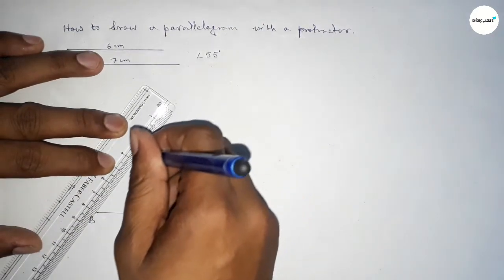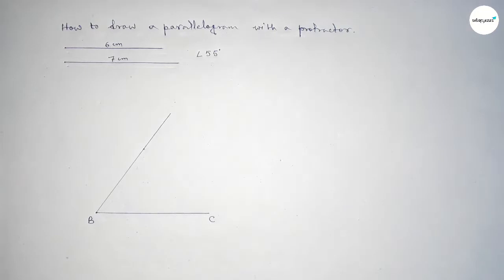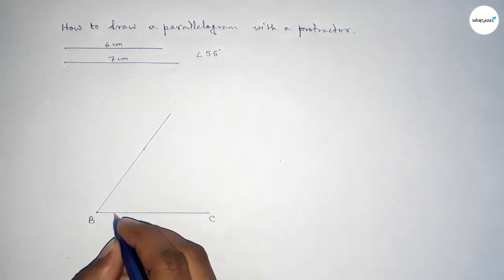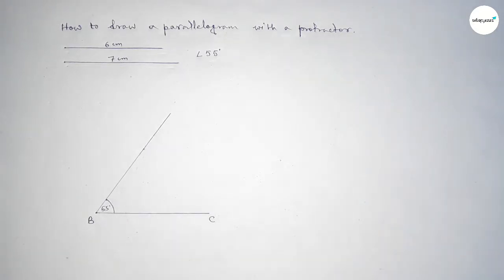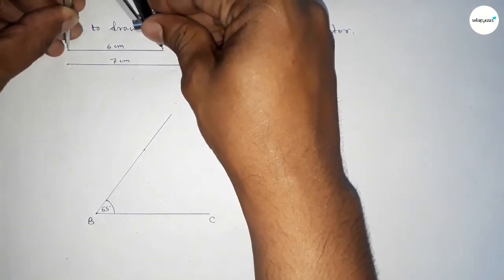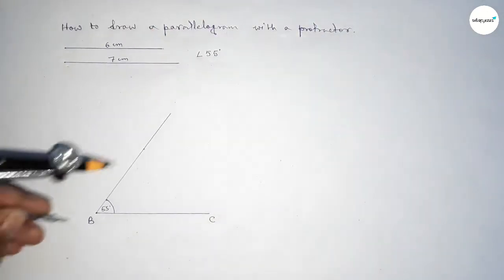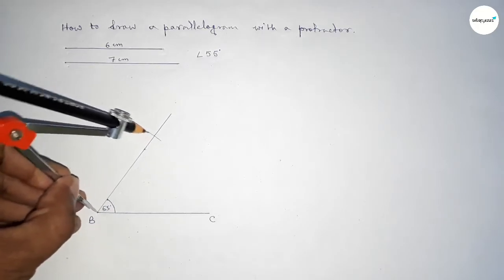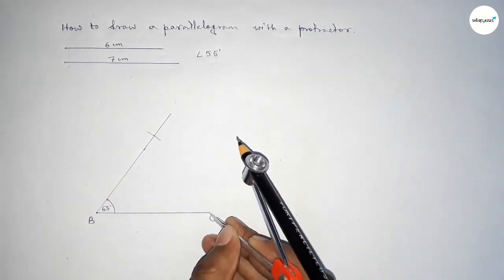Now joining this to get a 55-degree angle. Next, taking the length of 6 centimeters by using a compass, and putting the compass on point B and cutting here with the same length.